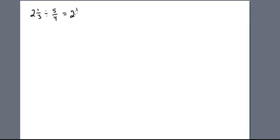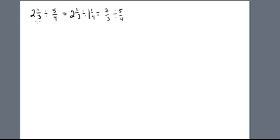You might see this written as 2 and 1 third divided by 1 and a quarter, or equivalently as 7 thirds divided by 5 quarters. What we're going to do here is use the partition model — for example, I have 2 and 1 third yards of fabric, and that's enough for 1 and 1 quarter wedding dresses.